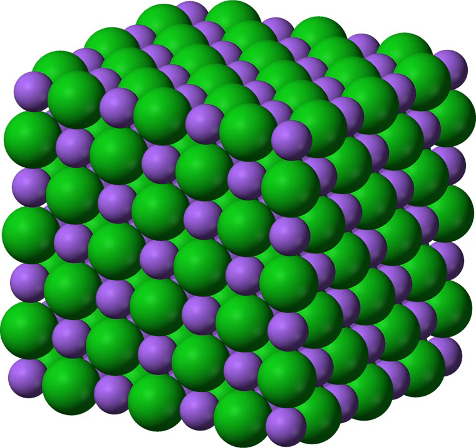In chemistry, an ionic compound is a chemical compound composed of ions held together by electrostatic forces termed ionic bonding. The compound is neutral overall, but consists of positively charged ions called cations and negatively charged ions called anions.